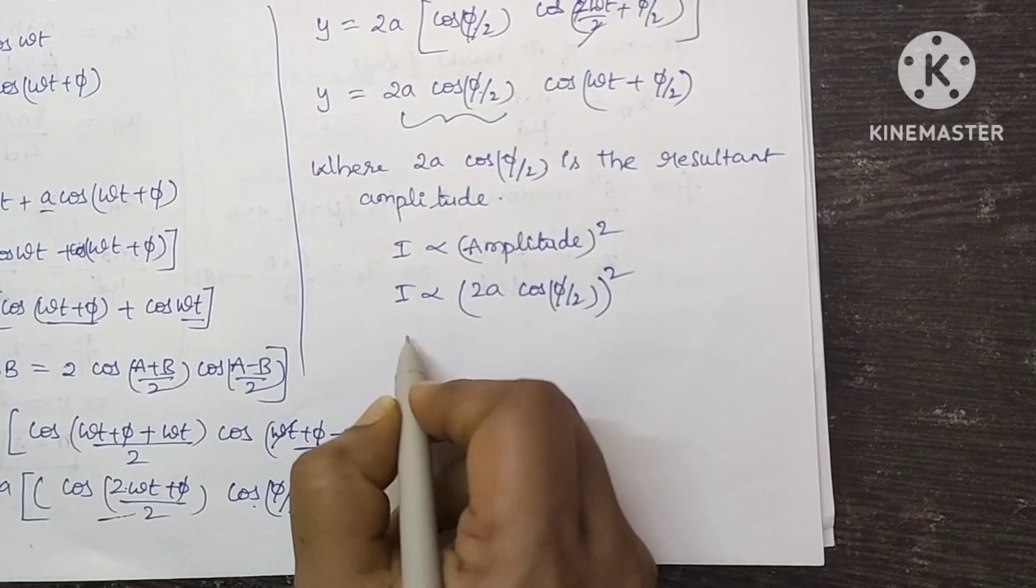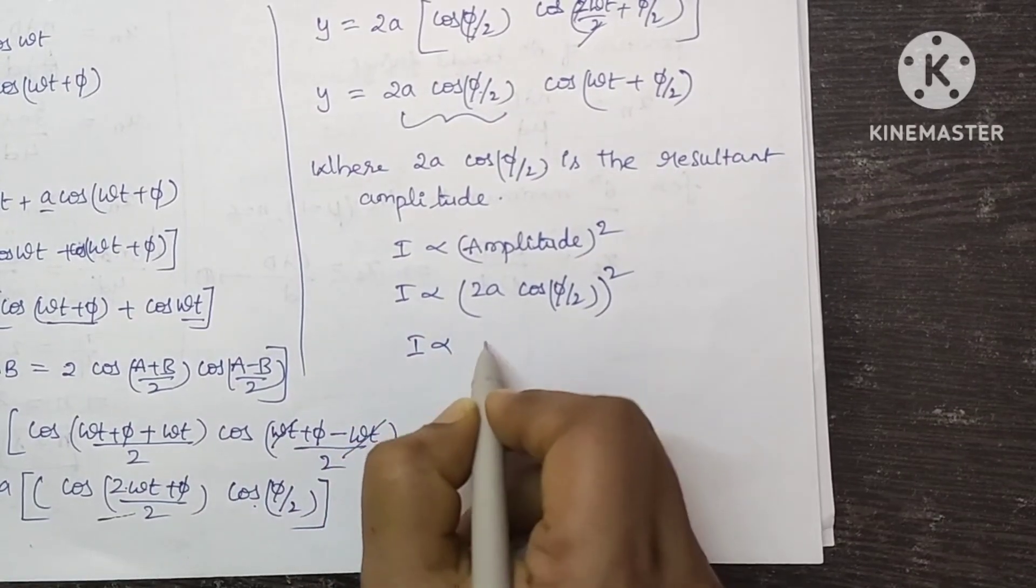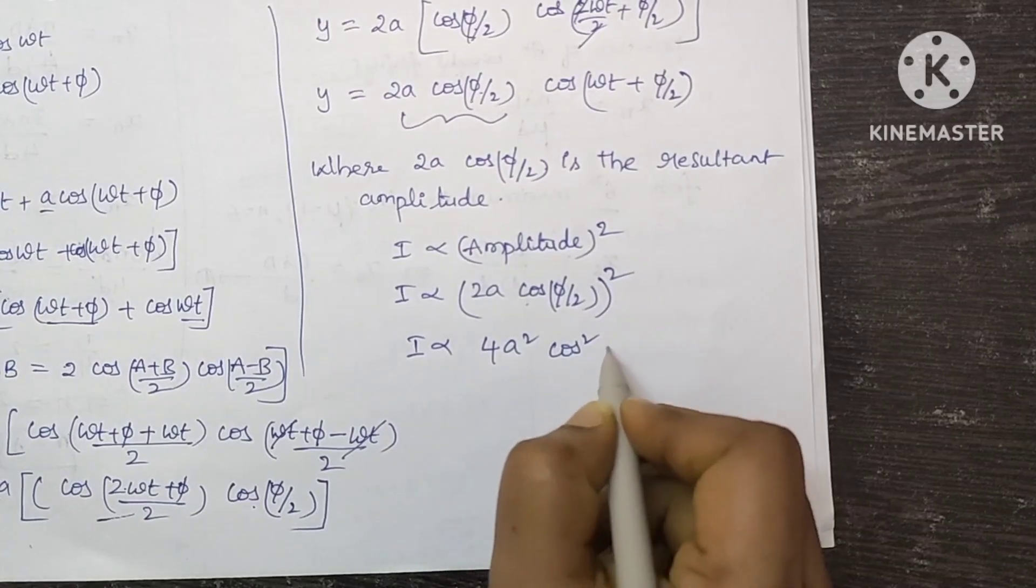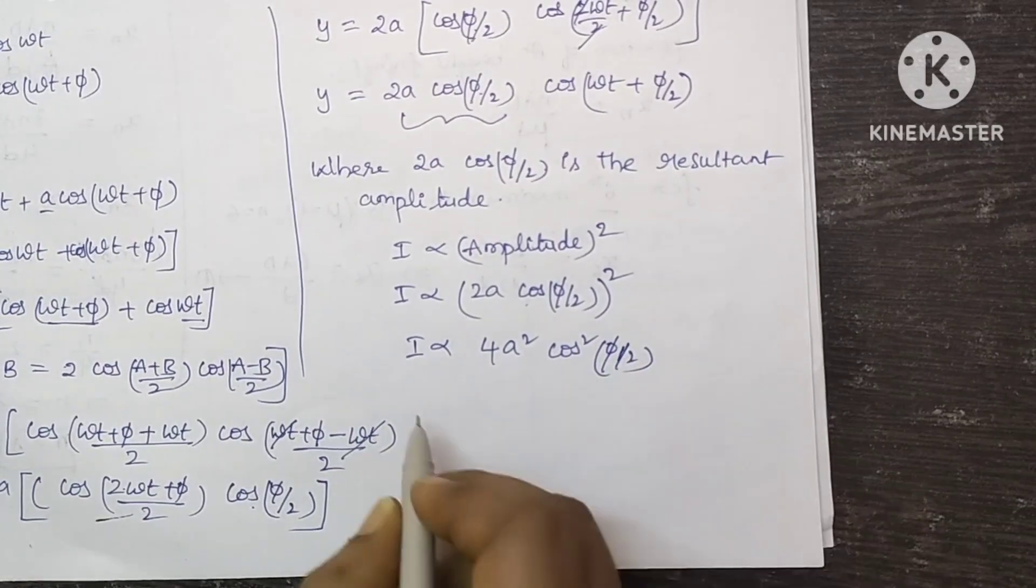So I is directly proportional to 4A square. Apply the square inside the brackets: cos square phi by 2.